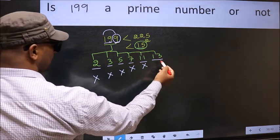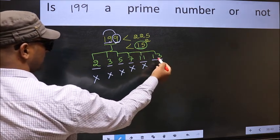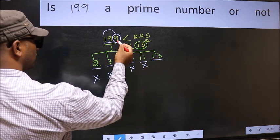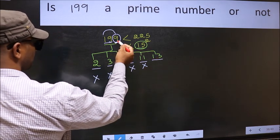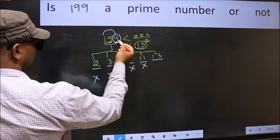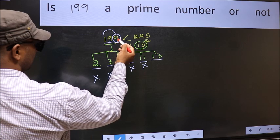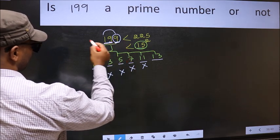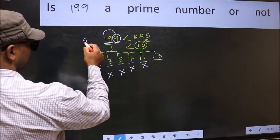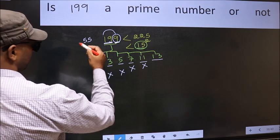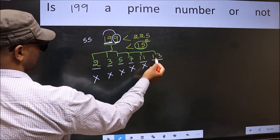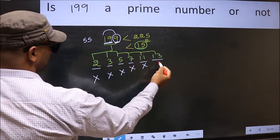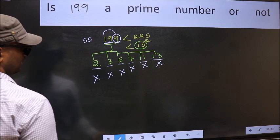Next, number 13: to check divisibility by 13, multiply the last digit by 4 and add to the rest. So 9 times 4 is 36; add 19 to that, we get 55. Since 55 is not divisible by 13, this number is also not divisible by 13.